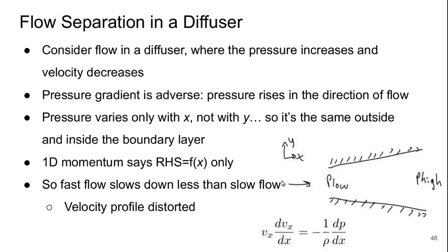That means that our one-dimensional momentum equation says that the right-hand side is a function of the x-location only. So what this says is that the fast flow, where vx is large, basically at a given x-location this right-hand side is a constant.